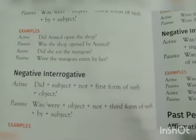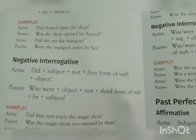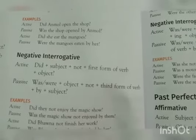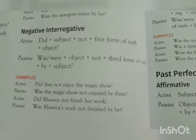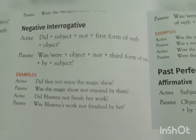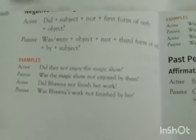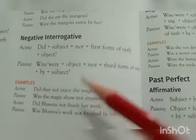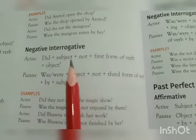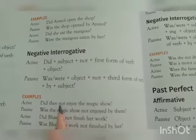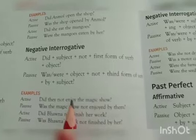For past indefinite negative interrogatives, the active structure is: did plus subject plus not plus first form of verb plus object, followed by a question mark. The passive structure is: was/were plus object plus not plus third form of verb plus 'by' plus subject. Examples: 'Did they not enjoy the magic show?' becomes 'Was the magic show not enjoyed by them?' 'Did Bhavana not finish her work?' becomes 'Was Bhavana's work not finished by her?' Now let me explain how to relate the rules with the examples.